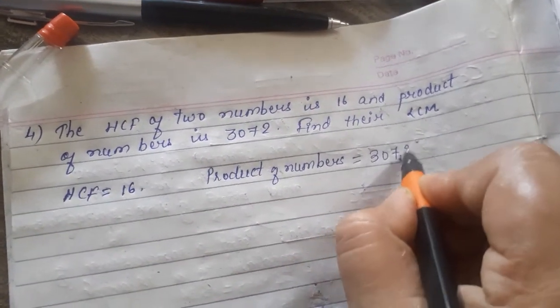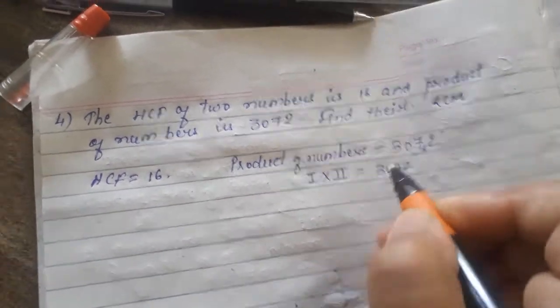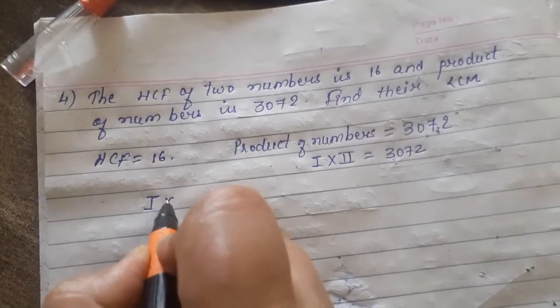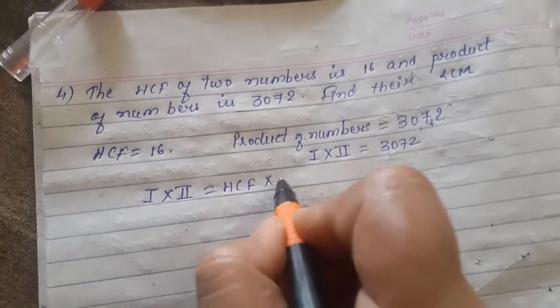So product of numbers is actually what? First number multiplied by second number equals 3072. Now our formula is that first number multiplied by second number equals HCF into LCM.